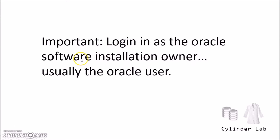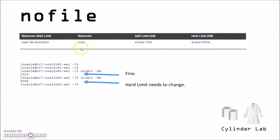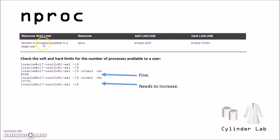It's important to log in as the Oracle software installation owner now — usually the Oracle user. The first one we're going to look at is the open file descriptor. You check it with this command here. I got this for the soft limit, which is fine. For the hard limit, I got this number, but they're recommending this, so this will need to be changed. For the next one, the number of processes available to the Oracle user: the soft limit is set to this and the hard limit is set to this, so some changes will be needed here.